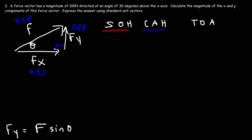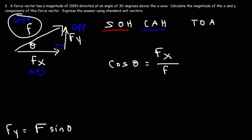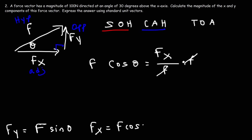Now let's consider the CAH part of SOHCAHTOA. Cosine of the angle equals the adjacent side, which is Fx, over the hypotenuse F. Multiplying both sides by F, we get that the x-component of the force vector is Fx = F·cos(θ).